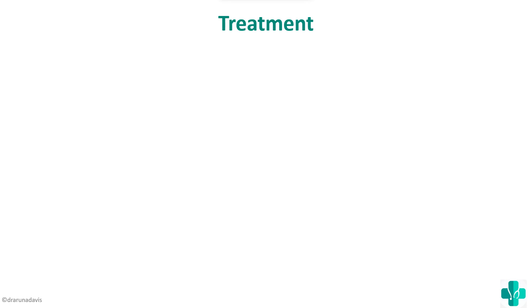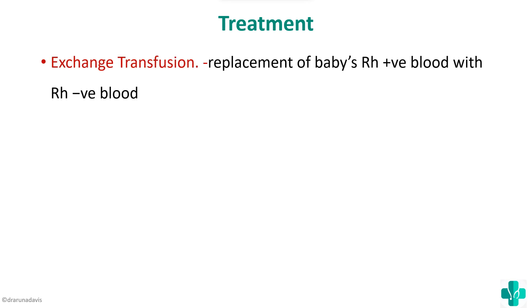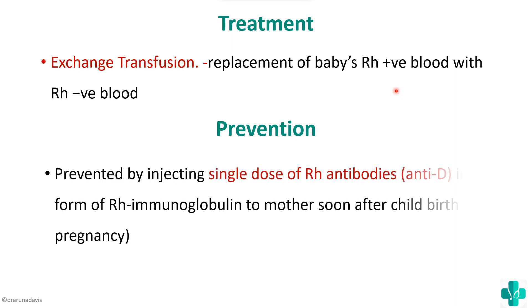Regarding treatment: we can perform exchange transfusion, which means replacing the baby's Rh positive blood with Rh negative blood so that the antibodies cannot bind and hemolyze the RBCs. For prevention, it is simple — in the first pregnancy, administering a single dose of Rh antibodies to the mother soon after the first childbirth will neutralize any fetal RBCs that entered the maternal circulation and prevent antibody formation in future pregnancies.